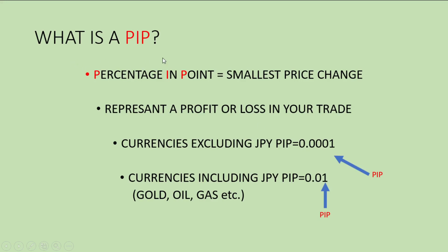What is a PIP? Percentage in Point. Percentage in Point is the smallest price change between two pairs. This represents a profit or a loss in your trade. How do we determine the PIP?